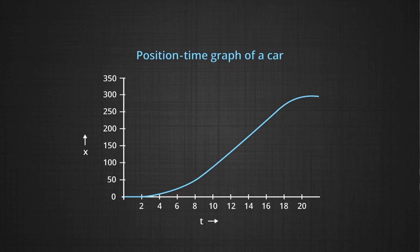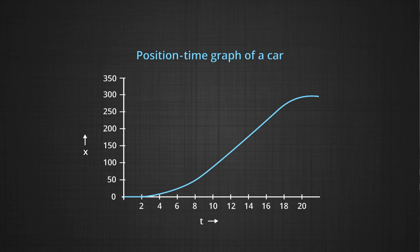Let us look at the position time graph for a car. A car may accelerate first, then move with a steady speed on a highway, and may slow down or change speed. On this position time graph, notice that in the first 4 seconds very little distance is covered, but by around 18 seconds the distance travelled is about 200 meters.